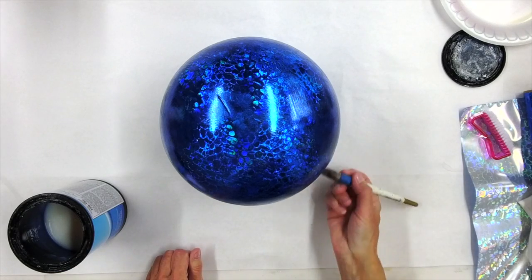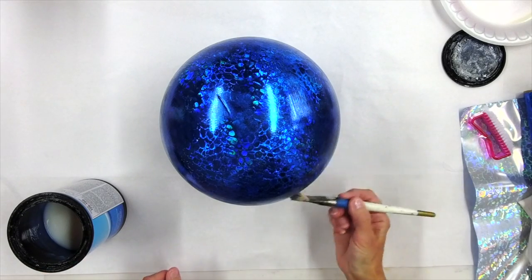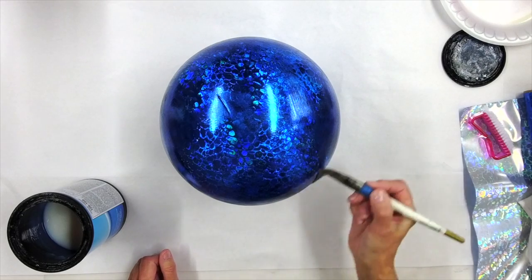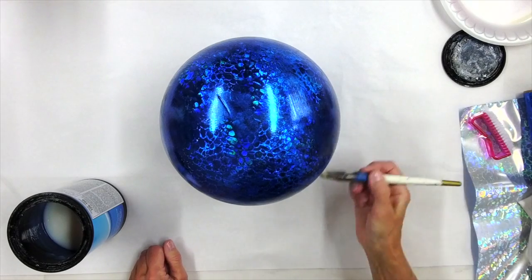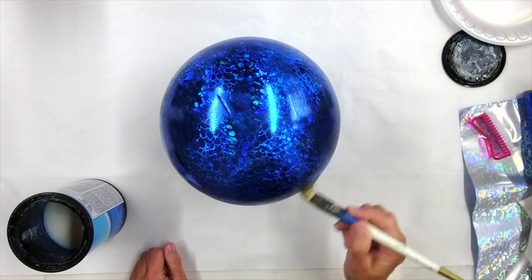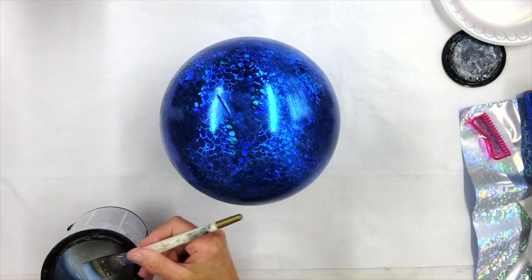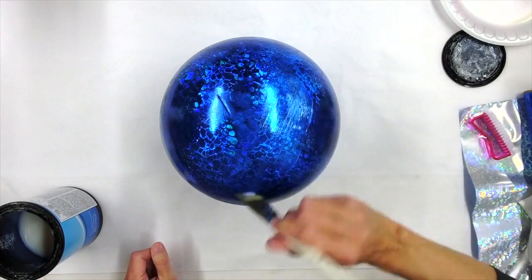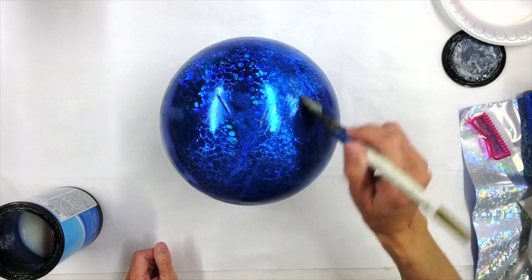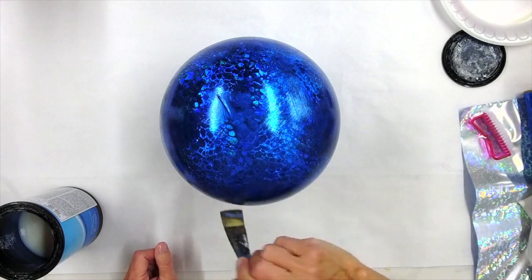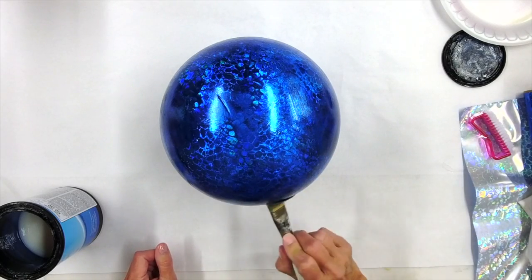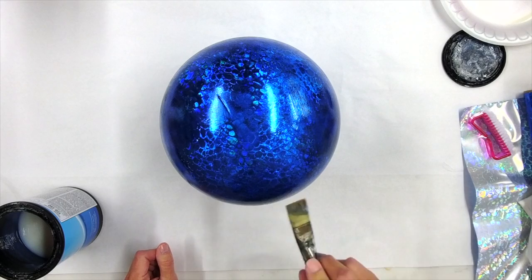So the only thing you need to do is just finish it out. I did pick gloss top coat to make sure that my foil stayed super bright and shiny. And I would suggest making sure you apply several layers of the top coat on here for the ultimate protection. And then go stick this in your garden and enjoy it for many, many years.